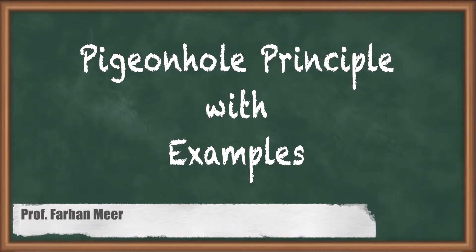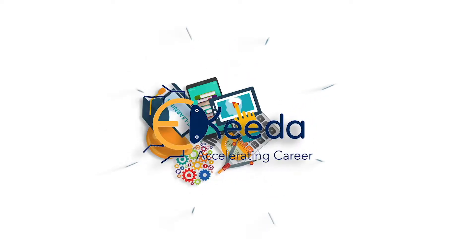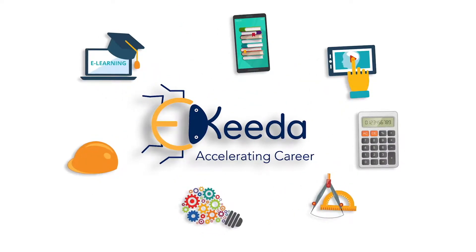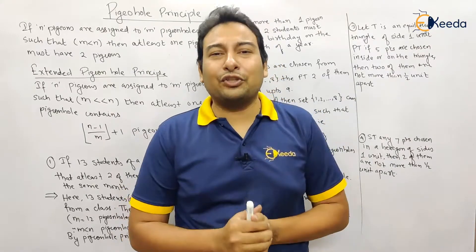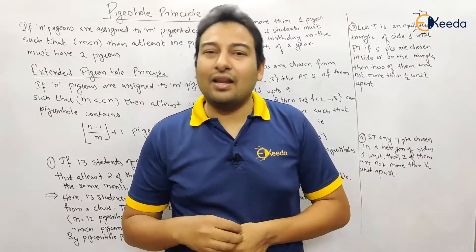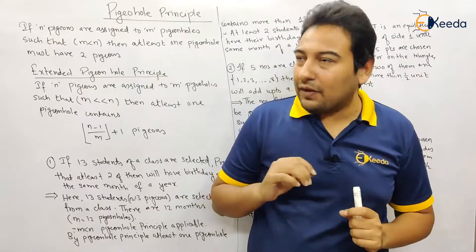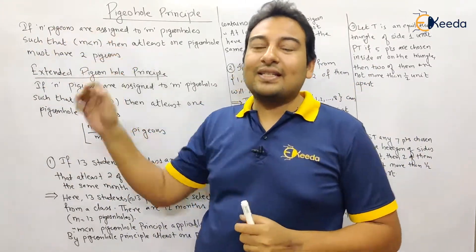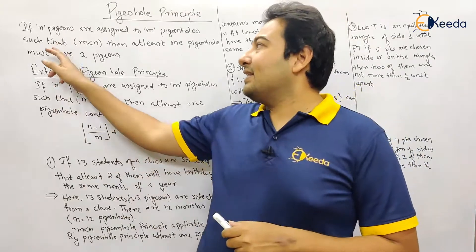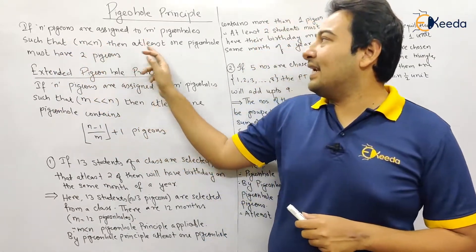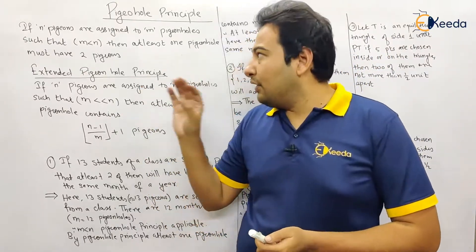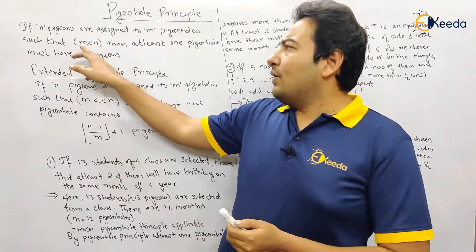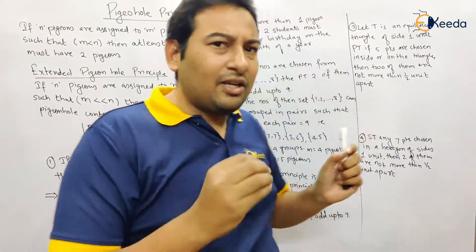Hello friends, in this video we'll talk about the Pigeonhole Principle with examples. Let's discuss this very simple yet very important principle. The definition: if n pigeons are assigned to m pigeonholes such that m is less than n, then at least one pigeonhole must have two pigeons. The condition is m must be less than n.